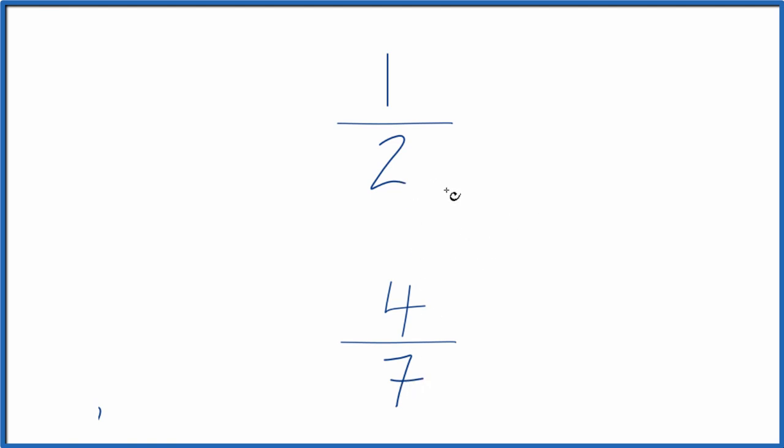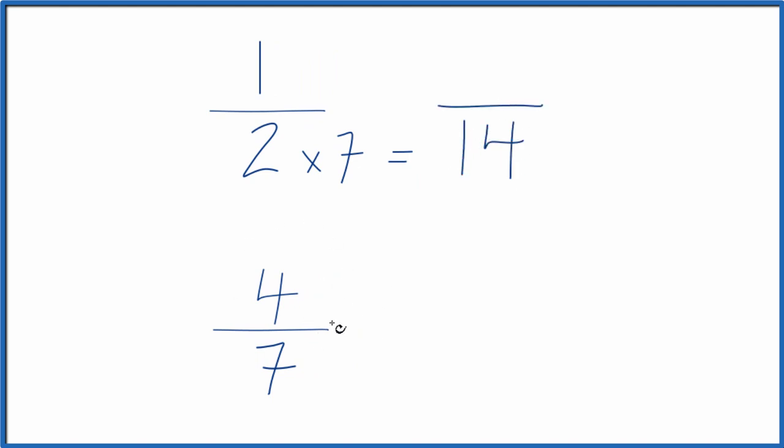Let's multiply 2 times 7. And when we do that, we end up with 2 times 7 is 14. Down here, we'll multiply 7 times 2. When we do that, we get 14 again. So now we have this common denominator.